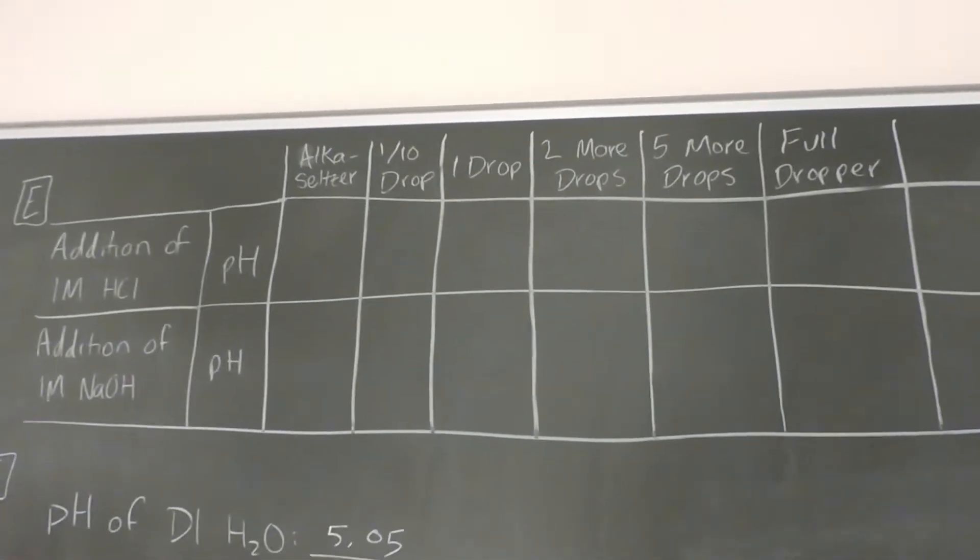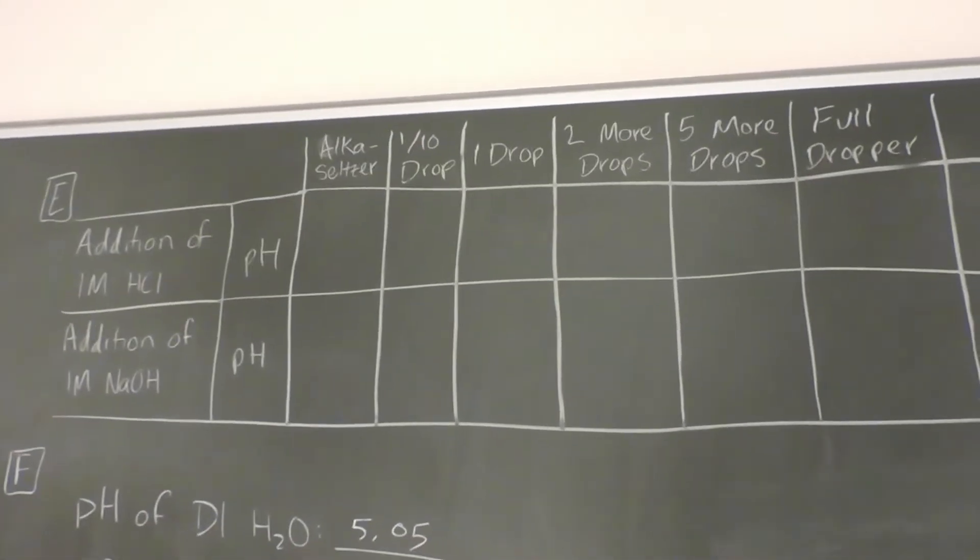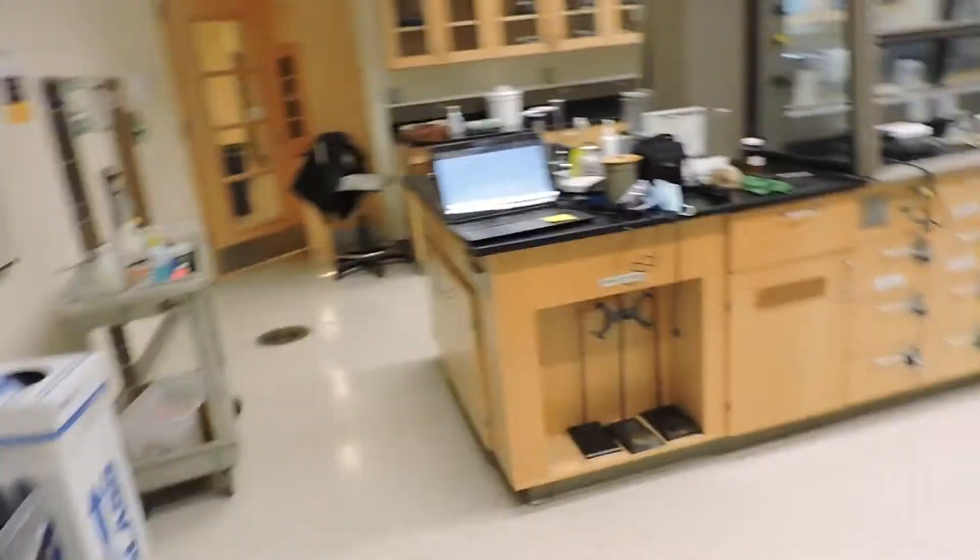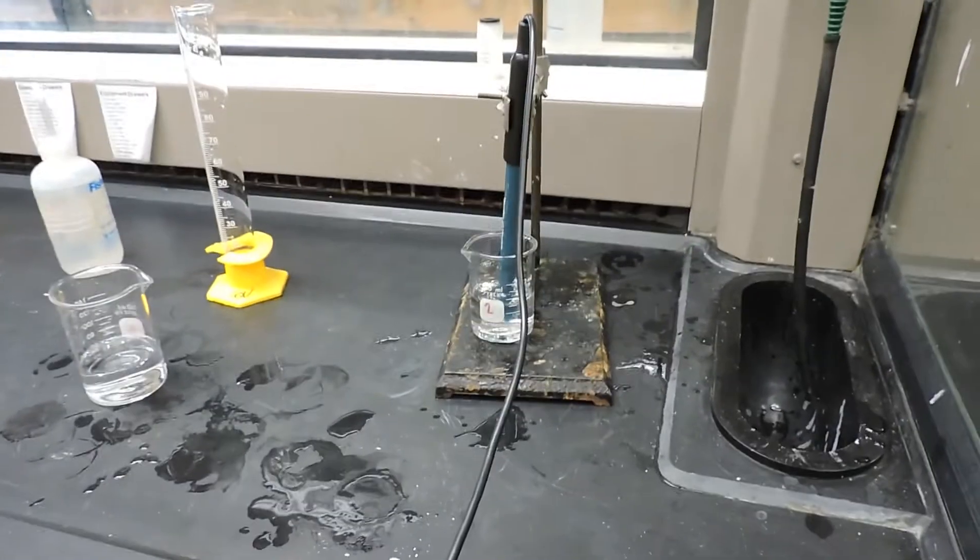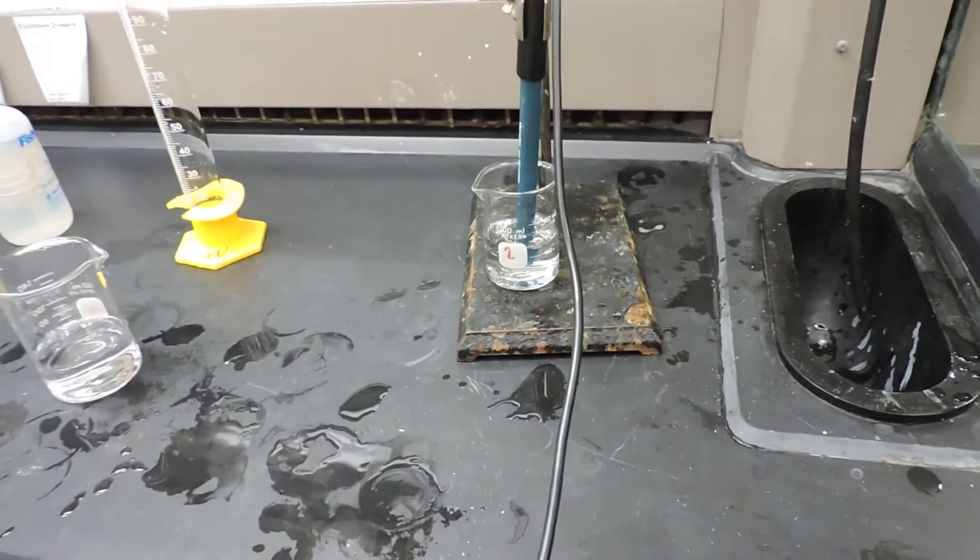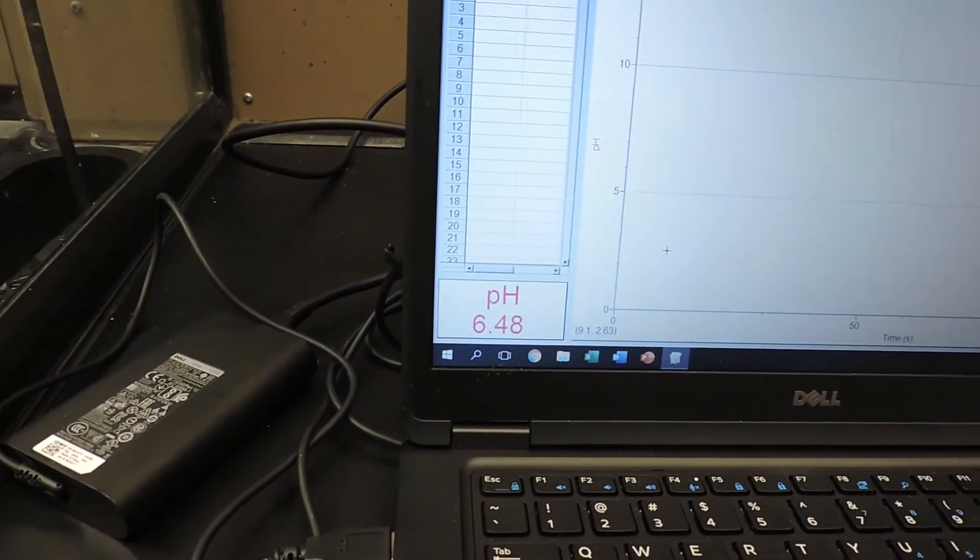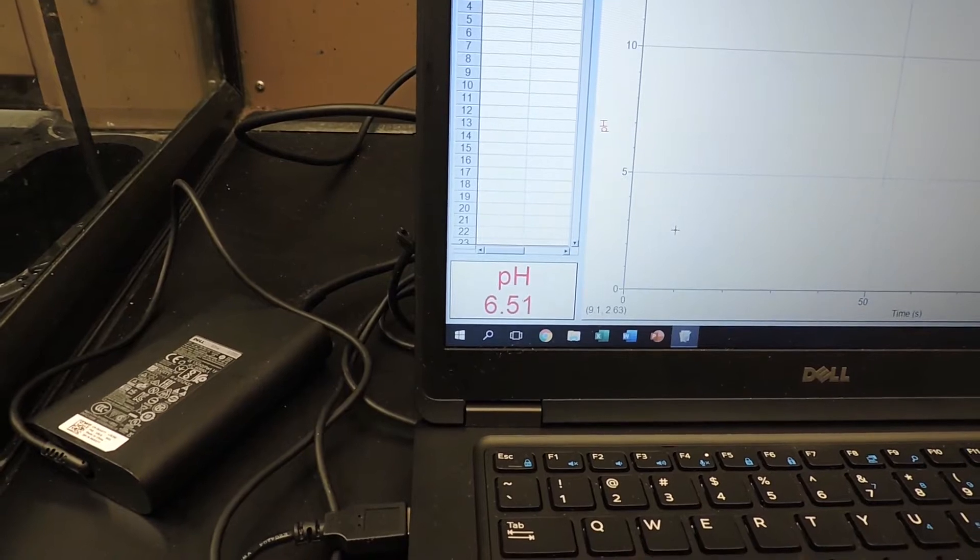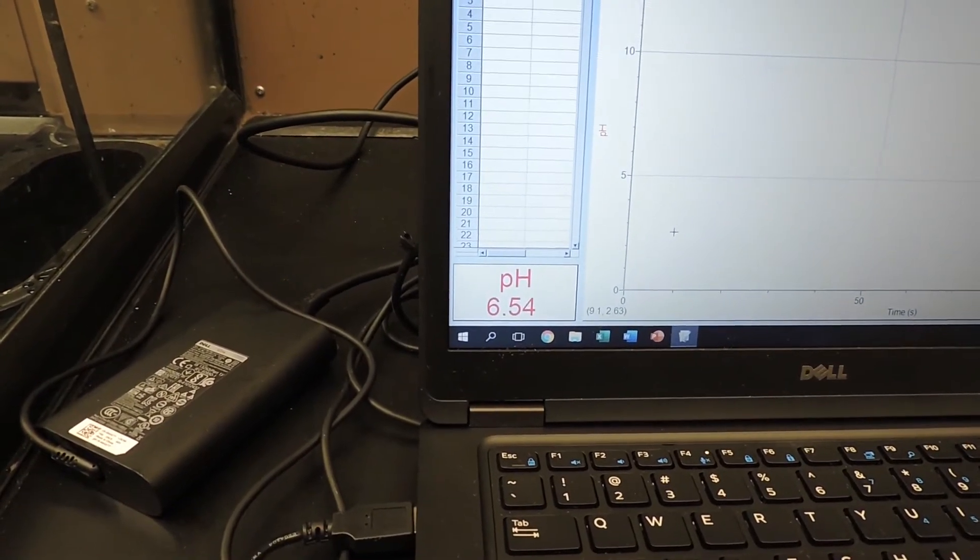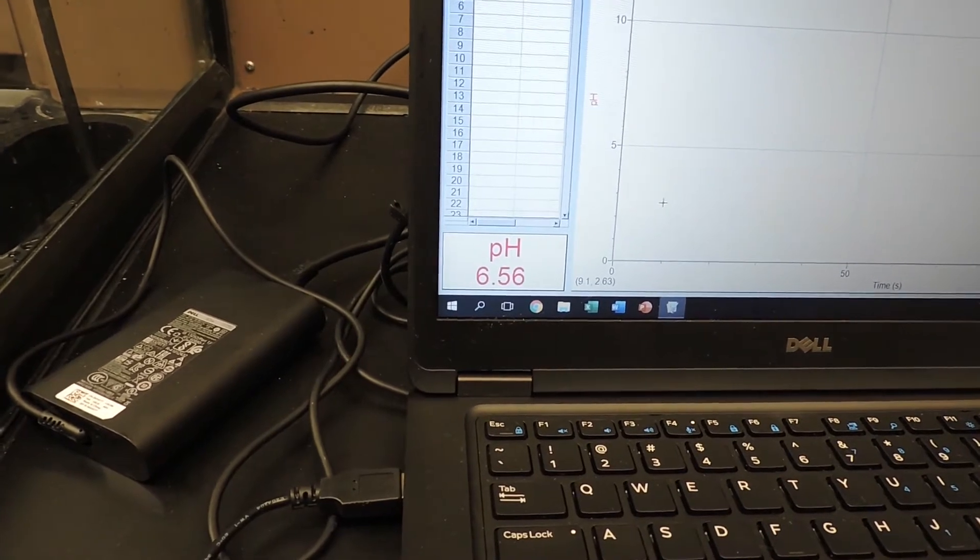Then we will repeat the same procedure that we have been doing where we add different amounts of acid and base and see how the pH is changing once we do that. Now we have transferred 50ml of the Alka-Seltzer solution to the beaker and the pH of this is 6.56.